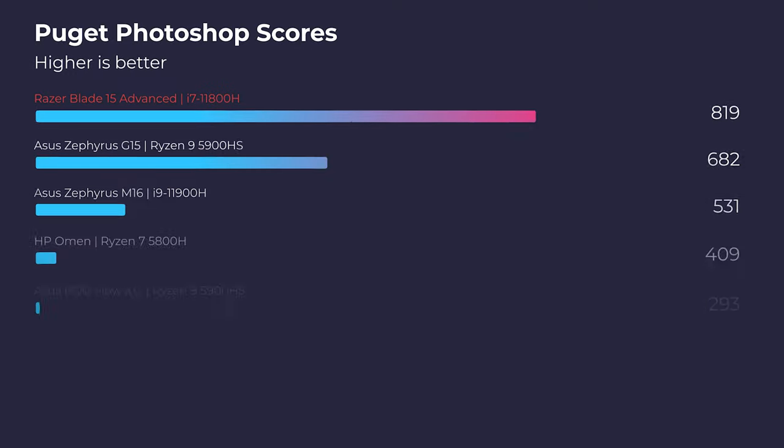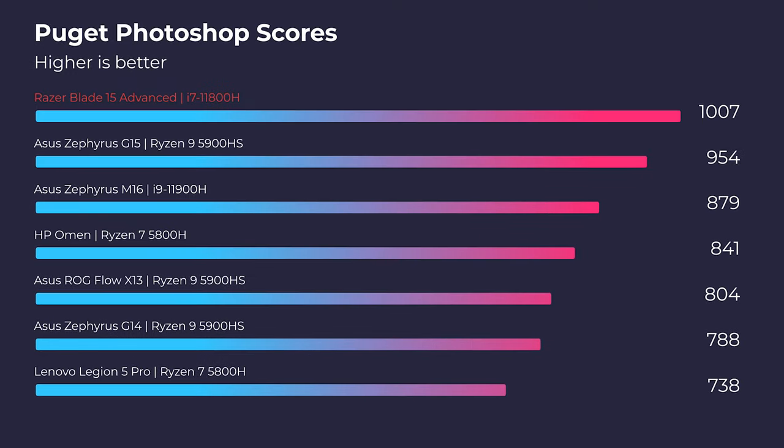Moving on to Photoshop, this laptop scored a 1007 — one of the highest scores I've ever seen on my channel. These scores continue to climb year over year, which is of course what we want to see. So if you're going to be using Figma, the Affinity Design Suite, or if you're an artist using Photoshop, Illustrator, or the Adobe Design Suite, you'll be in good hands.